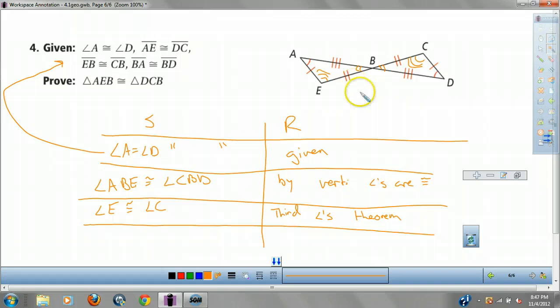And if three angles are congruent, three sides are congruent, triangle AEB is going to be congruent to triangle DCB. By the definition of congruent triangles, of congruent figures. And that's all there is to it, guys. Hope you're enjoying.